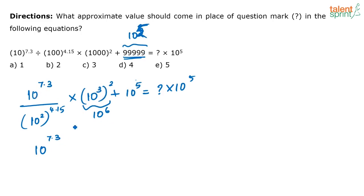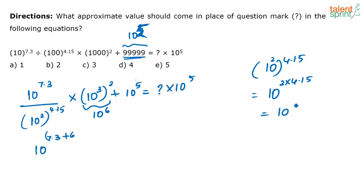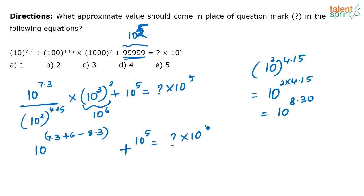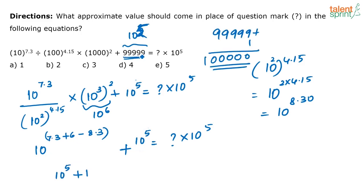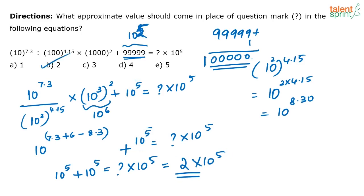10 to the power 7.3 times 10 to the power 6 is 10 to the power 13.3. The denominator: 10 squared whole to the power 4.15 equals 10 to the power 8.30. So the whole expression is 10 to the power of 7.3 plus 6 minus 8.3, which is 10 to the power 5, plus 10 to the power 5, equals question mark times 10 to the power 5. Since 7.3 minus 8.3 is minus 1, and minus 1 plus 6 is 5, we get 2 times 10 to the power 5. The answer is 2 — option B.